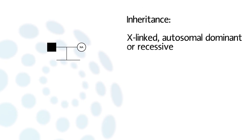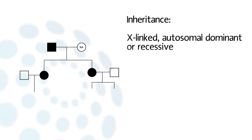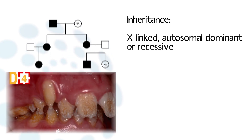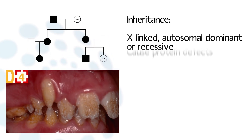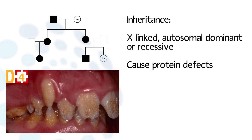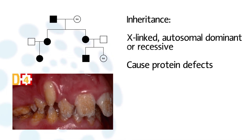The mode of inheritance could be X-linked, autosomal dominant, or recessive, and can be caused by defects in any protein involved in these stages. This can in turn cause Amelogenesis Imperfecta. Several phenotypes have been defined.